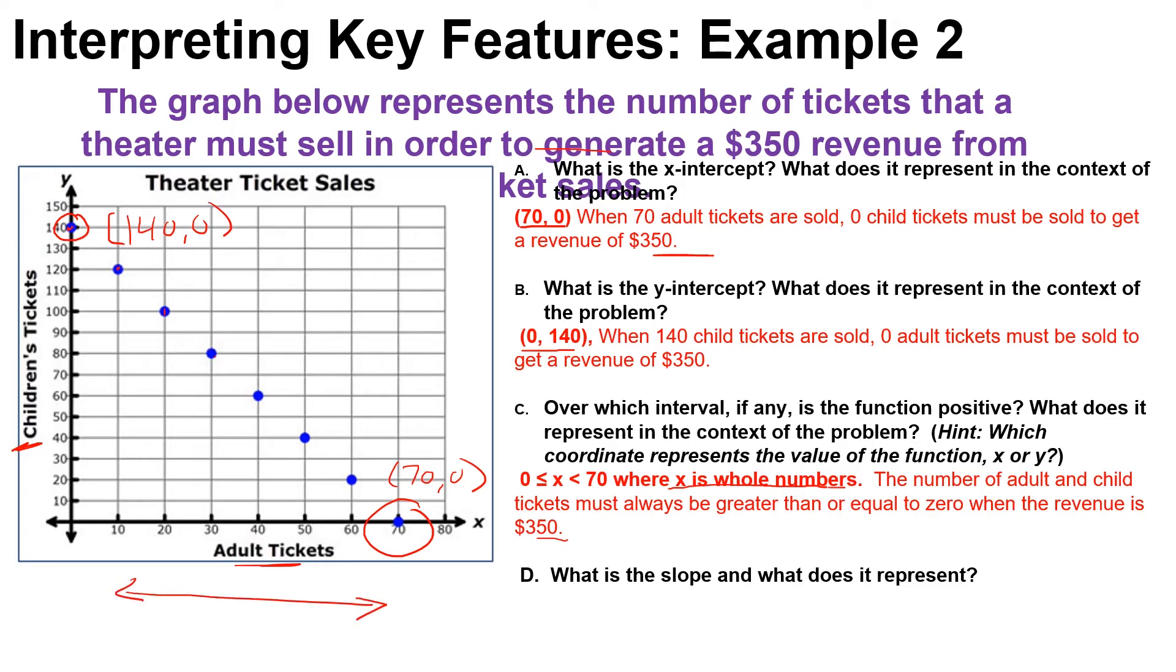Last, it says what is the slope and what does it represent? We could pick two ordered pairs - I'm going to pick the smaller ones here, right here and here - and I could count down one, two, and so this is represented by 20. So that would be a negative 20. Then I will go over 60 to 70, that would be a positive 10. So negative 20 over positive 10 would leave me with negative 2.